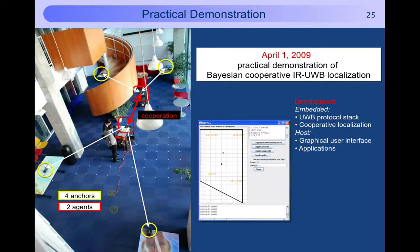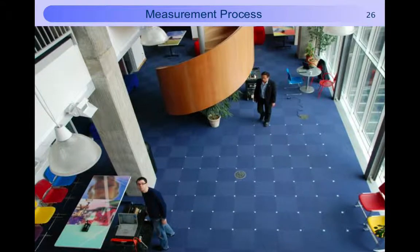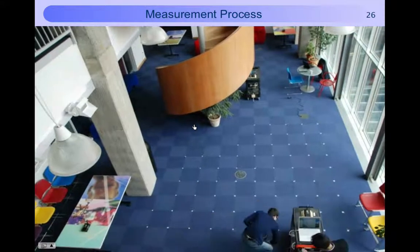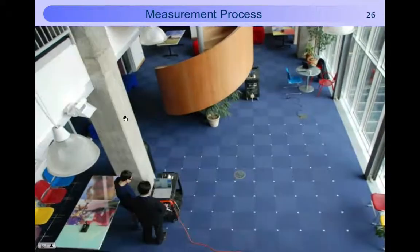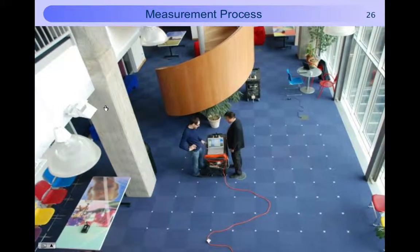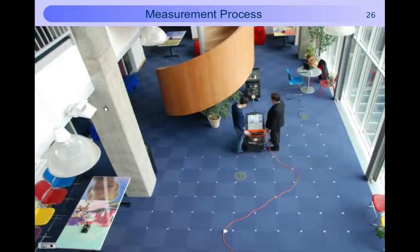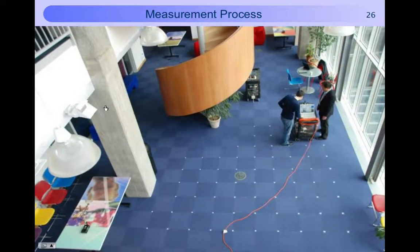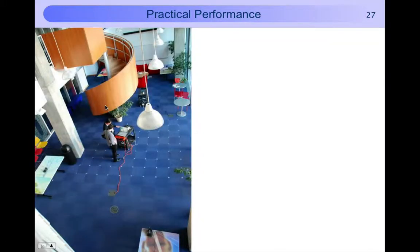To obtain quantitative results we performed a number of measurements placing one of the agents on 71 discrete points on the floor while the other agent remained static. This movie shows a quick dry run of the measurement process. The actual measurements took about five hours. The measurements yield the following results.